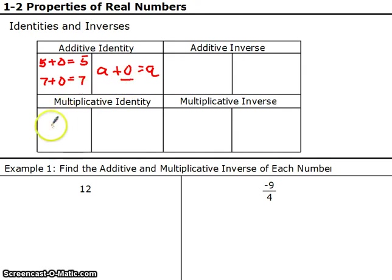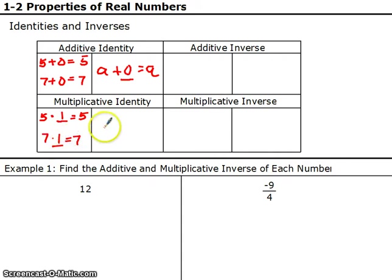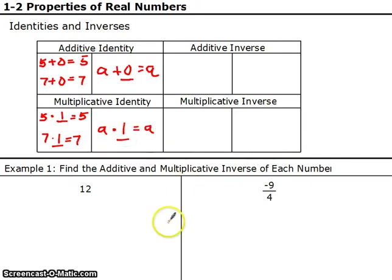Multiplication has an identity as well, but it's not the same number. If we use 0, 5 times 0 equals 0, not 5. The multiplicative identity — the number you multiply by so it stays the same — is 1. 5 times 1 equals 5. 7 times 1 equals 7. So for any number A, A times 1 equals A. So 1 is the multiplicative identity.